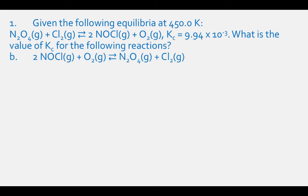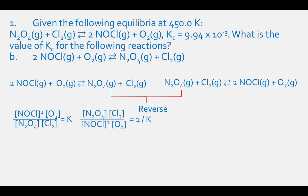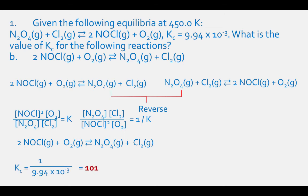To solve part B, compare the reaction equations and you will see that part B is the reverse of the original reaction. According to our rules, take the reciprocal of the K value. So Kc for 2 NOCl (gas) plus O2 (gas) in equilibrium with N2O4 (gas) plus Cl2 (gas) equals 1 divided by 9.94 × 10⁻³, which equals 101.